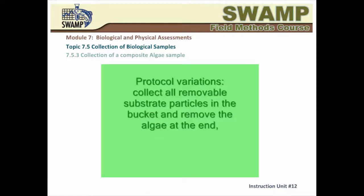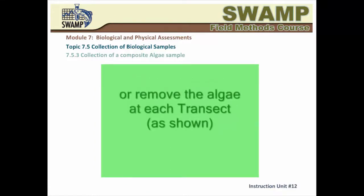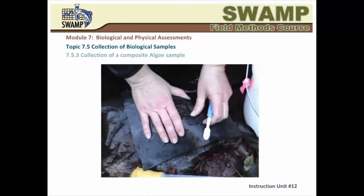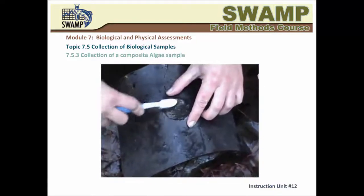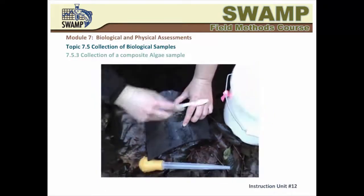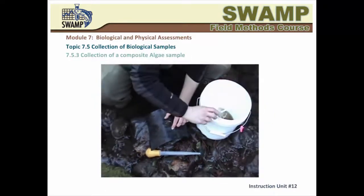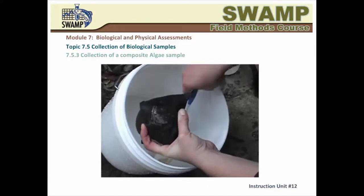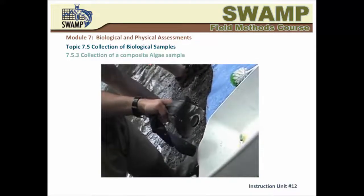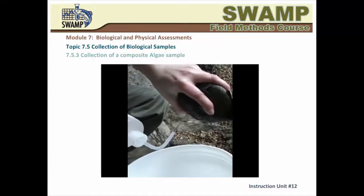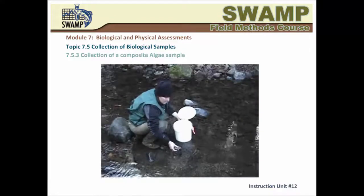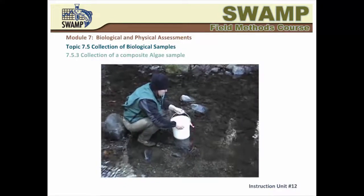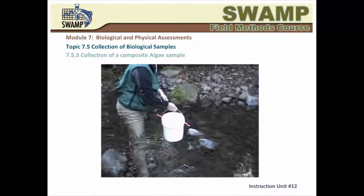Once you have found your substrate particle, you note the exact point where you have randomly touched it — this is the center of the sampling plot. You lift it carefully to the water's surface, top-side up, and gently remove anything that adheres to its bottom and sides. You can choose to either place the substrate particle in your bucket for later scrubbing, or perform the scrubbing immediately at each transect. To collect the subsample, you cover the substrate particle with a rubber delimiter and proceed to remove all of the material confined within the hole, using a toothbrush to scrub it off and then rinsing it into the bucket. Be mindful to use as little rinse water as possible.